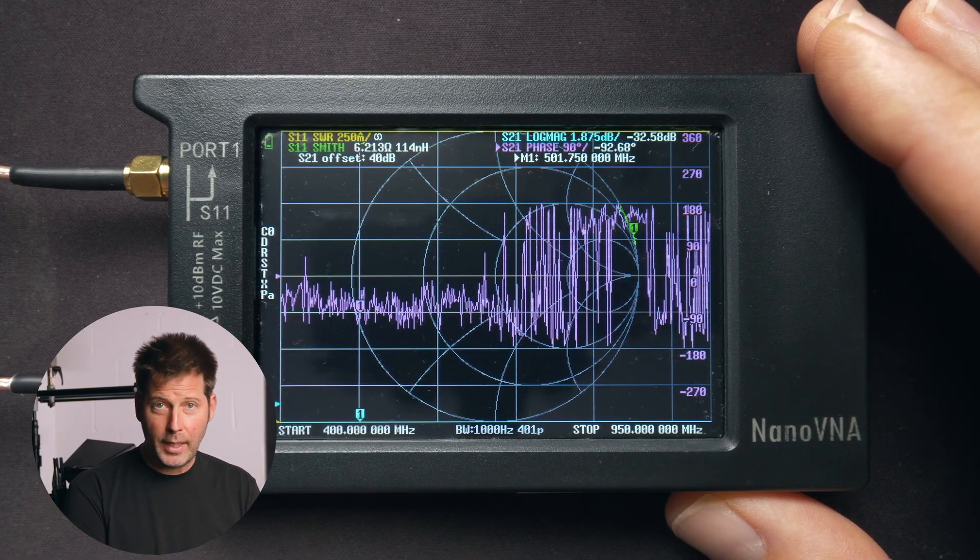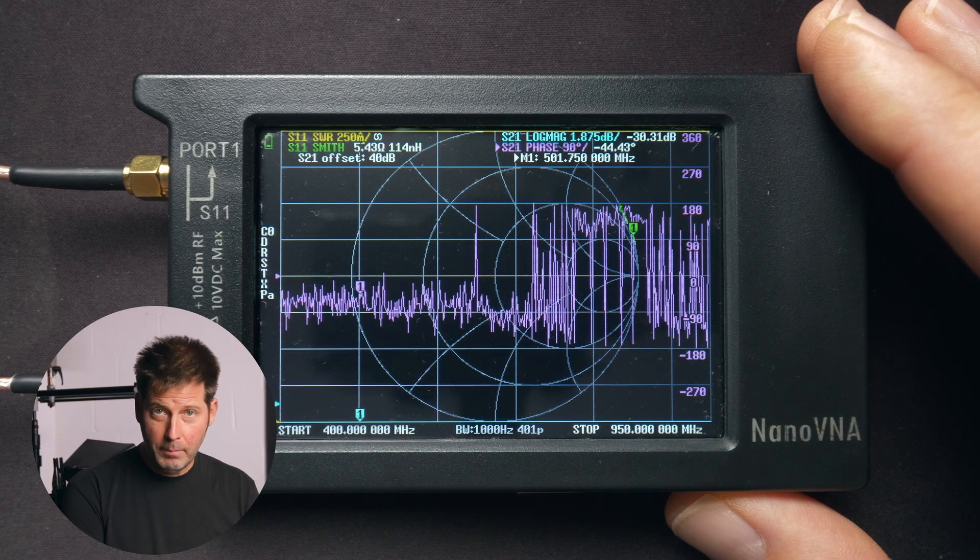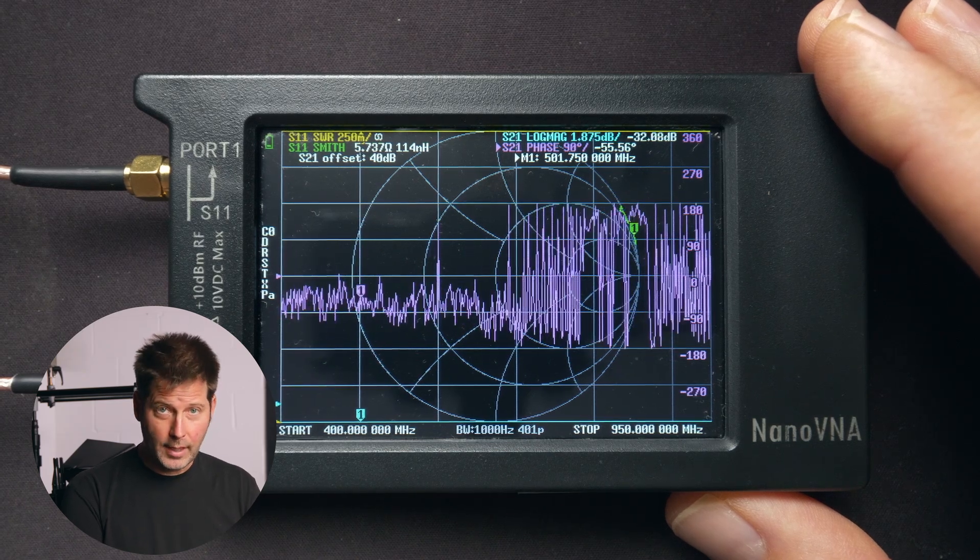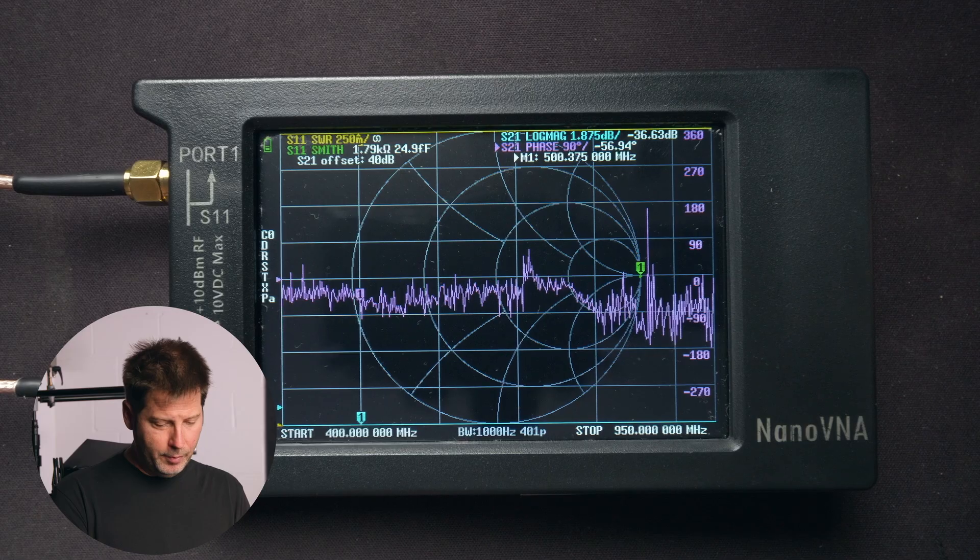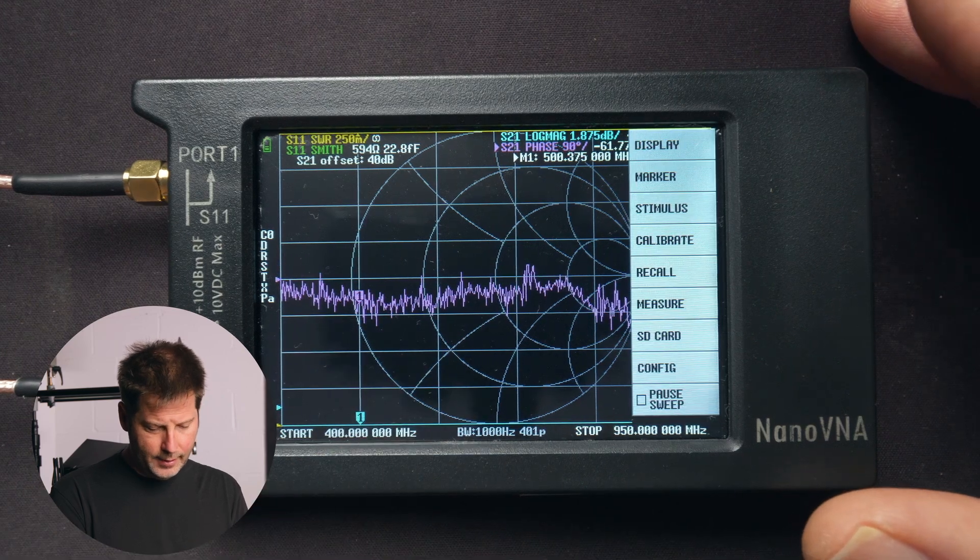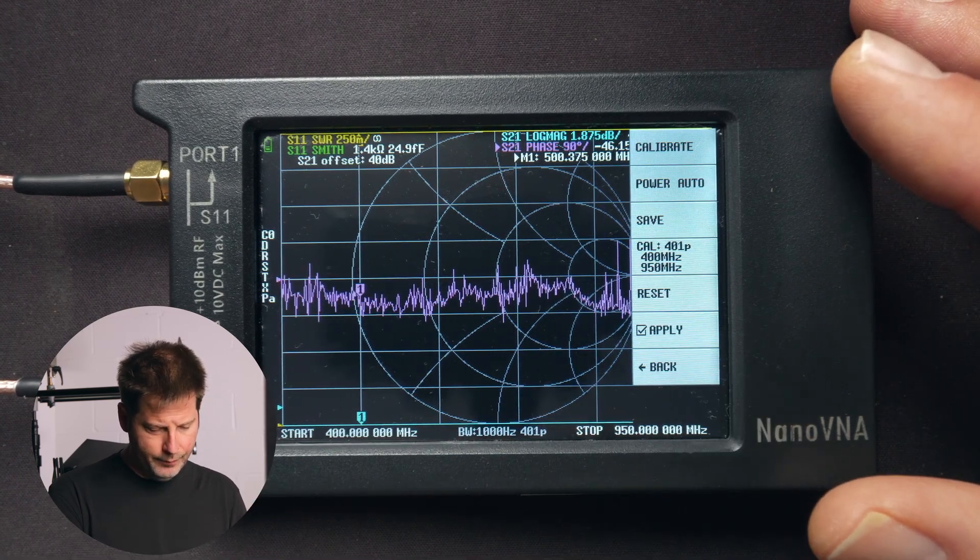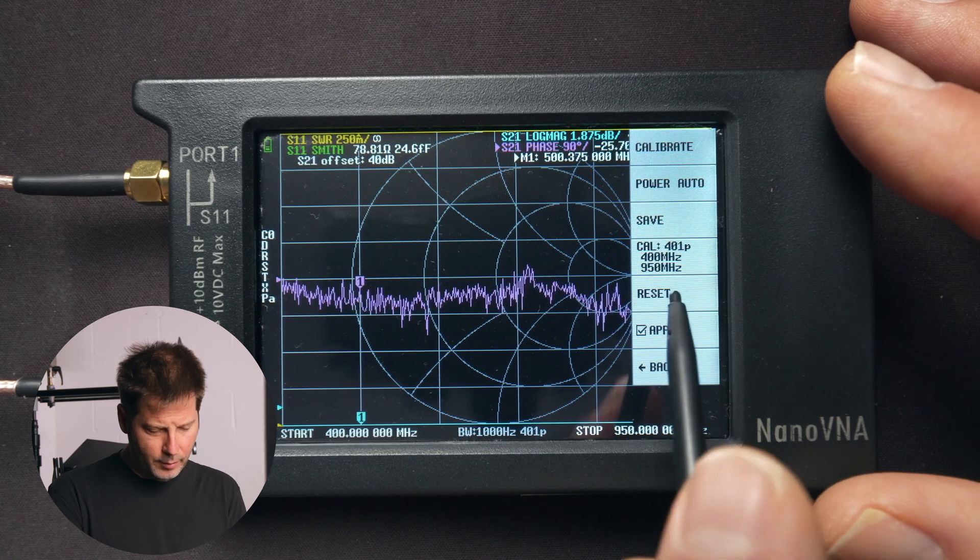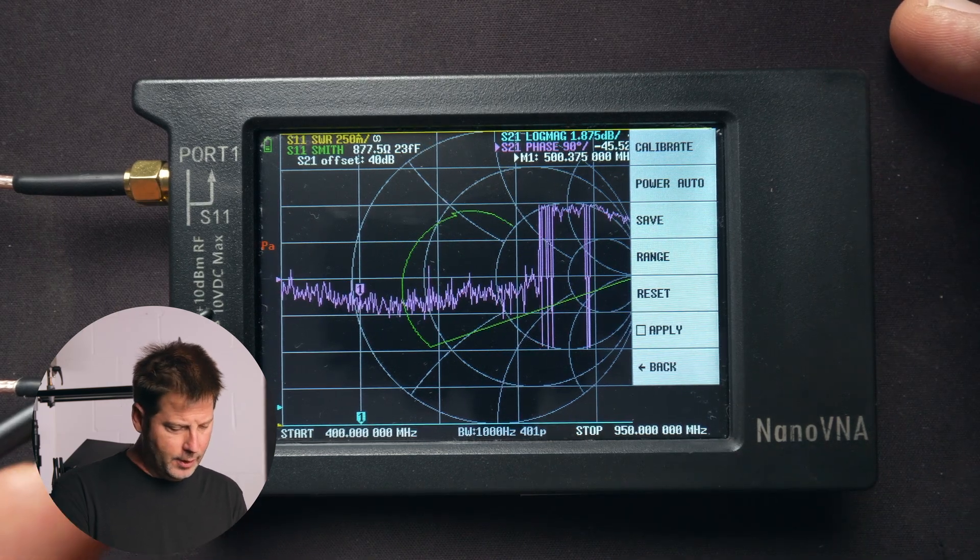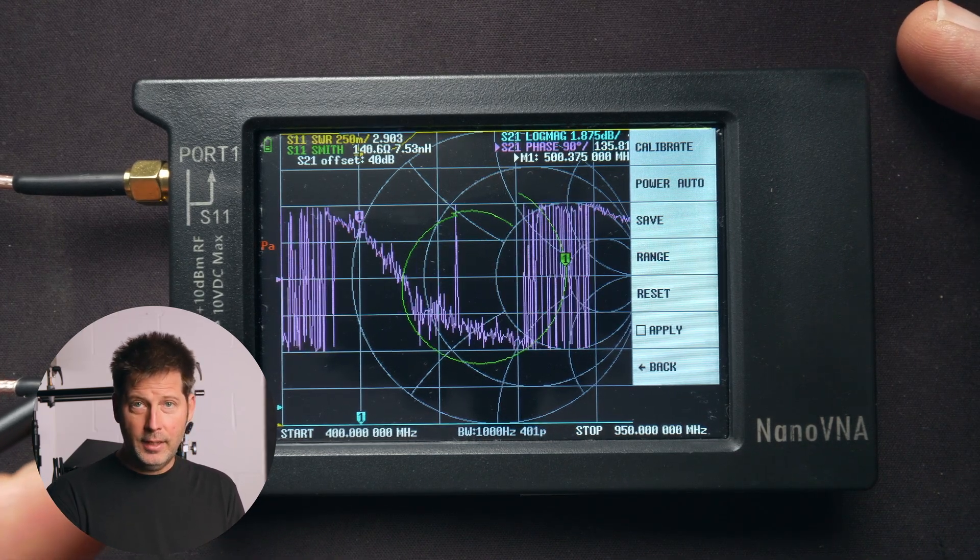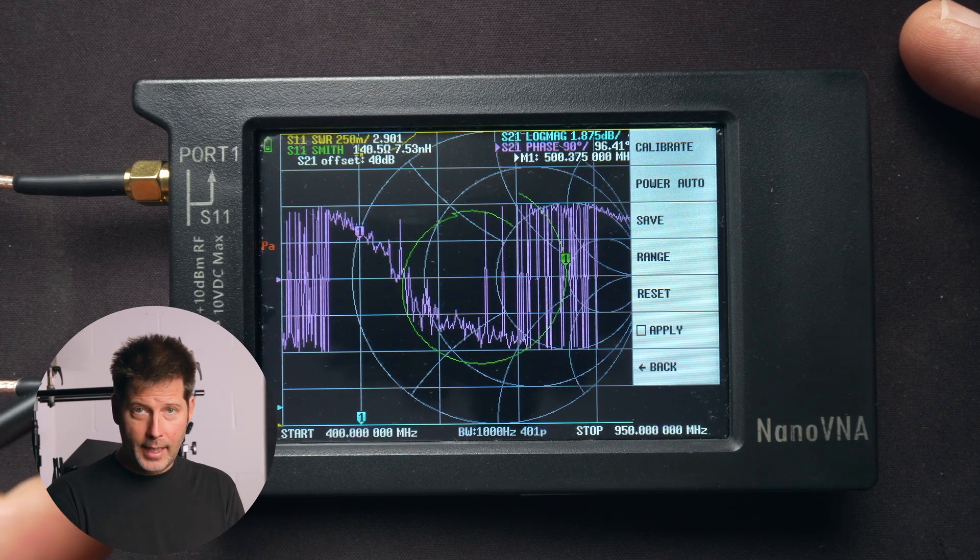This will be a nice wide range to work with when measuring our device under test. Our next step is we're going to touch the screen with a stylus and press the calibrate button. Next, we're going to press the reset button, and you'll notice here on the left-hand side, you'll see the letters P and A in red.